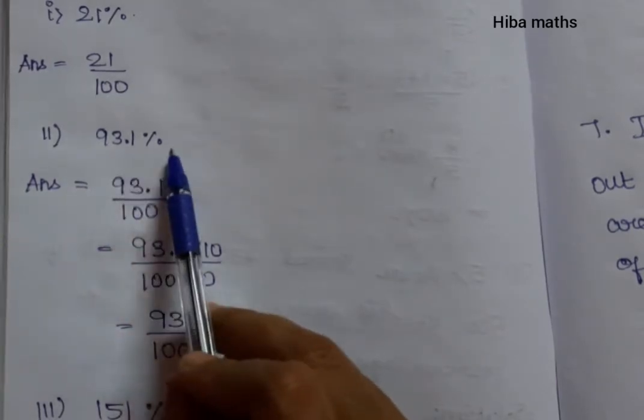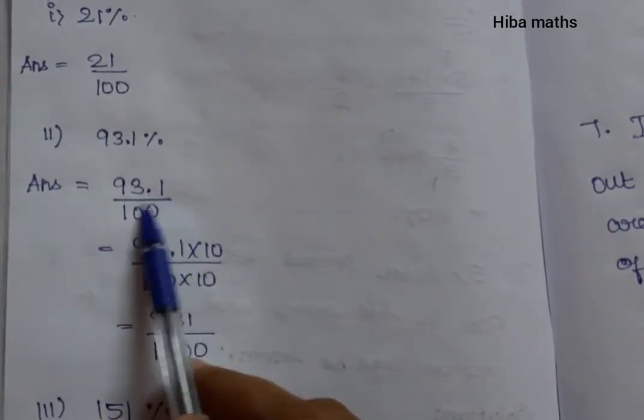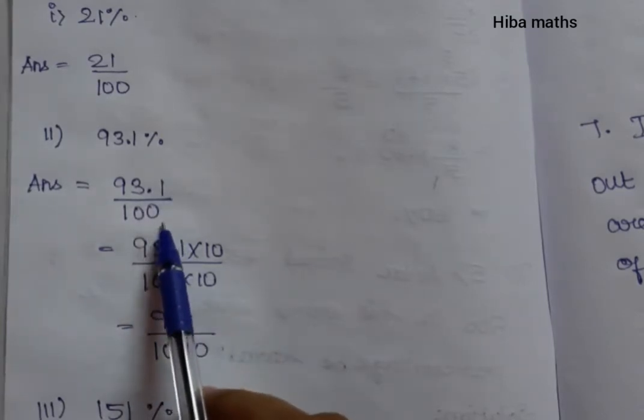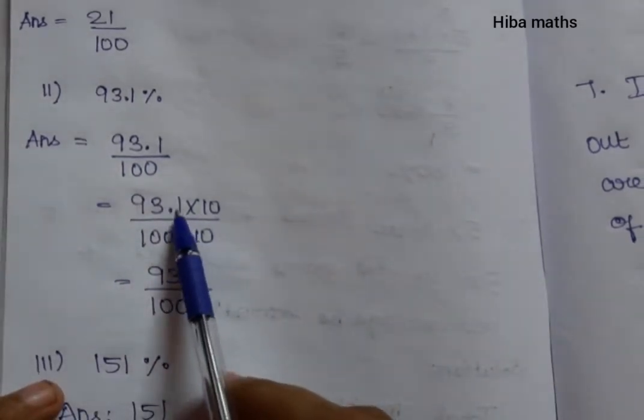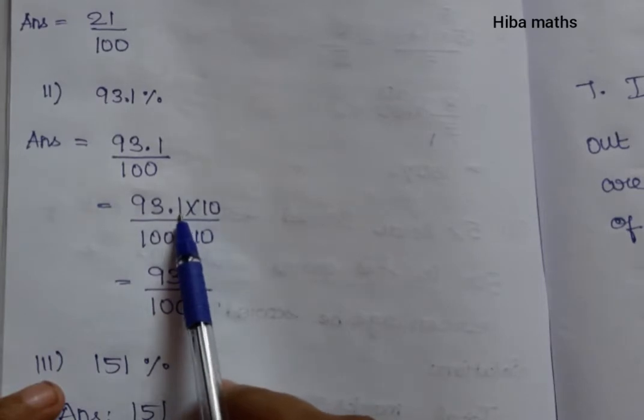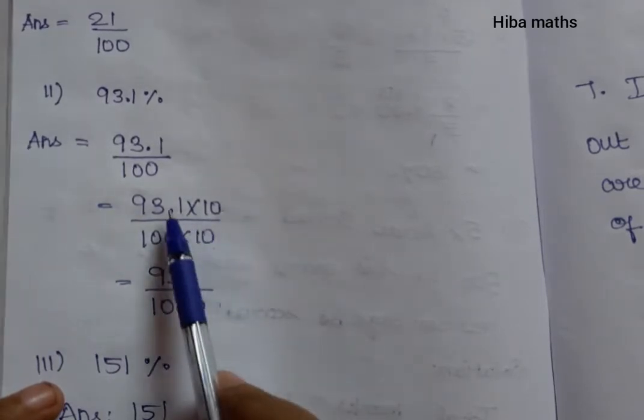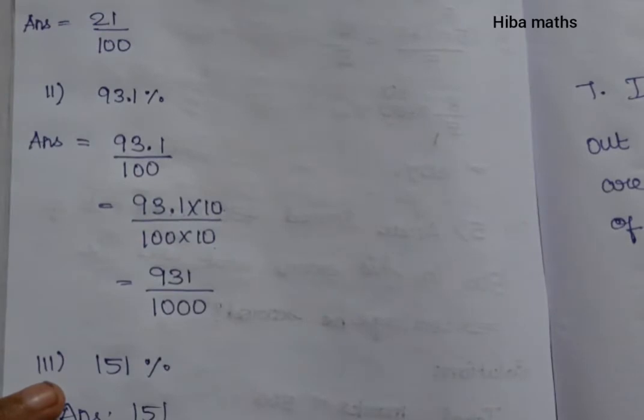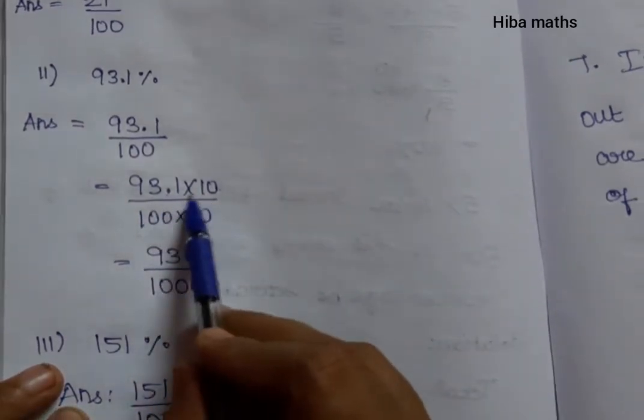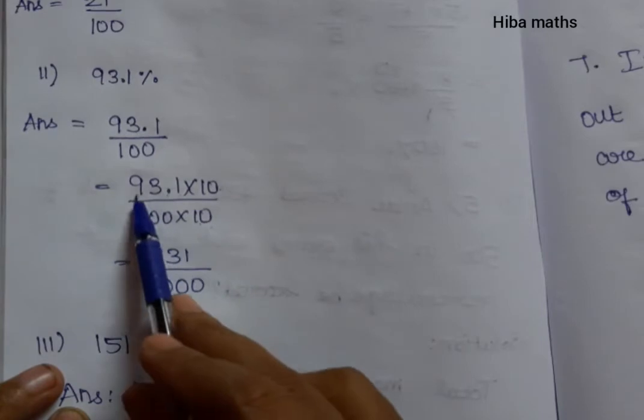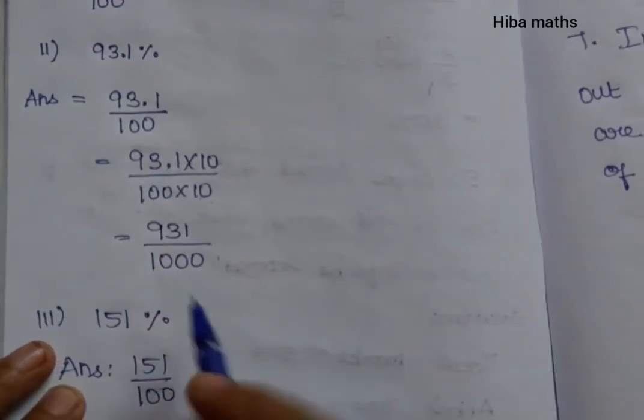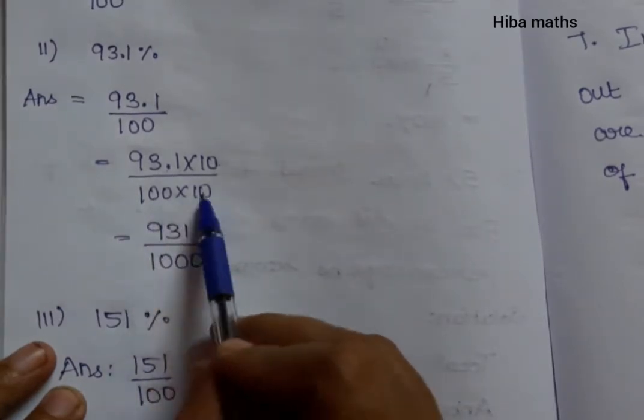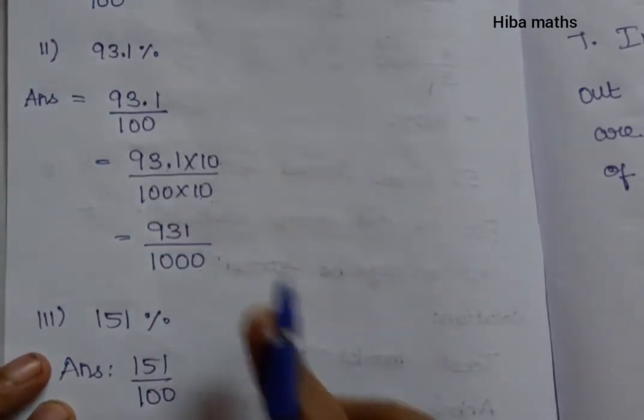93.1%. That is 93.1 divided by 100. When we have a decimal point in the fraction, we need to remove it. If we remove this point, we get 931. How do we adjust for the decimal? We count places: 100, 10, 1 - that's three places, so 1000. The answer is 931 over 1000.